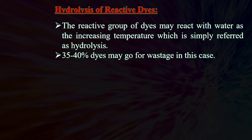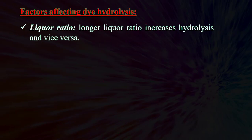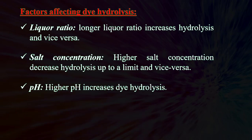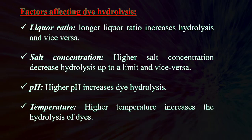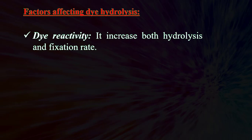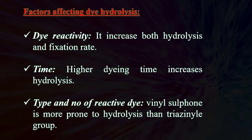Hydrolysis of reactive dyes: The reactive group of dyes may react with water with increasing temperature, which is referred to as hydrolysis; 35–40% of dyes may be wasted in this case. Factors affecting dye hydrolysis: liquor ratio (longer liquor ratio increases hydrolysis), salt concentration (higher salt concentration decreases hydrolysis up to a limit), pH (higher pH increases hydrolysis), temperature (higher temperature increases hydrolysis), dye reactivity (increases both hydrolysis and fixation rate), time (higher dyeing time increases hydrolysis), and type of reactive dye (vinyl sulfone is more prone to hydrolysis than triazinyl group).